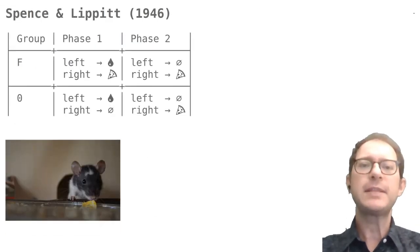Let's now look at another experiment, this time by Spence and Lippitt. These authors argue that if rats can learn a map of a complex maze like the one used by Tolman and Honzik, they should also be able to learn a very simple maze.